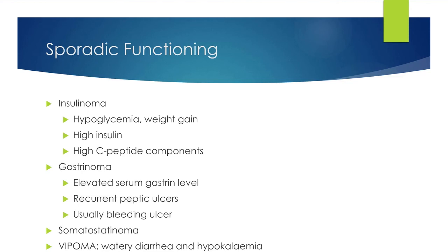Gastrinoma originates around the area of the duodenum. These patients usually present with unusual, recurrent bleeding ulcers — at the gastroesophageal junction, in the second or third part of the duodenum, or even in the jejunum. They are treated like peptic ulcers with Helicobacter pylori eradication, but they recur. The problem is that the tumor is most often undetectable on CT scan while already causing symptoms. We therefore measure gastrin levels and perform a gallium PET scan, which is very sensitive for localizing gastrinomas.